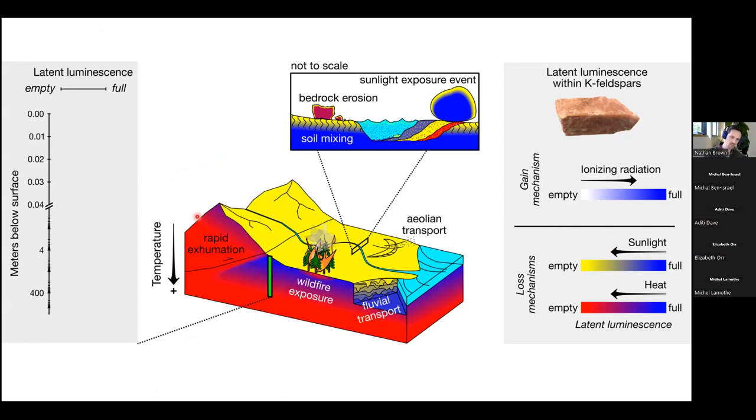So if you were to, for example, take a drill core throughout an entire rock column, what you would see is, in the uppermost centimeter or two, you'd have this region where there's enough sunlight getting through that sunlight caused detrapping is the main effect, and your traps would be empty because of that. Your luminescent signal would be zero.